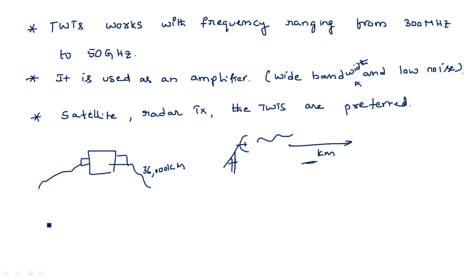If we compare the basic operating principles of TWT and klystron: TWT is an amplifier, while klystron may be an amplifier or an oscillator. In klystron we use resonant cavities, but no resonant cavities are used in TWT. The microwave circuit in TWT is non-resonant, and the wave propagates with the same speed as the electrons traveling in the electron beam.